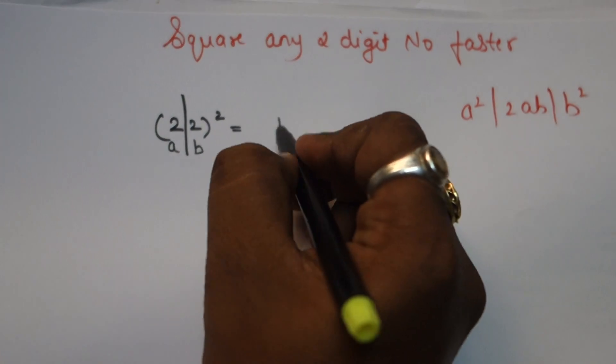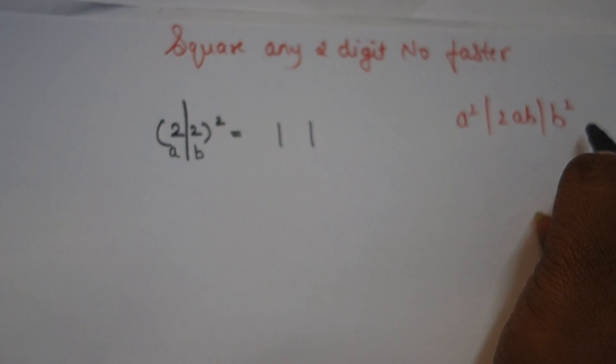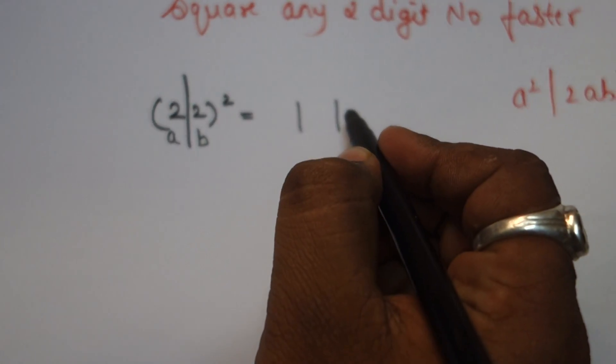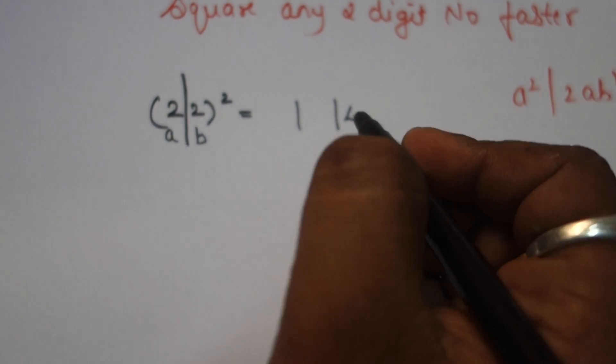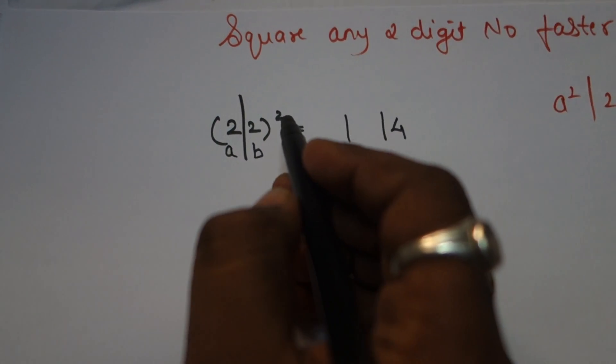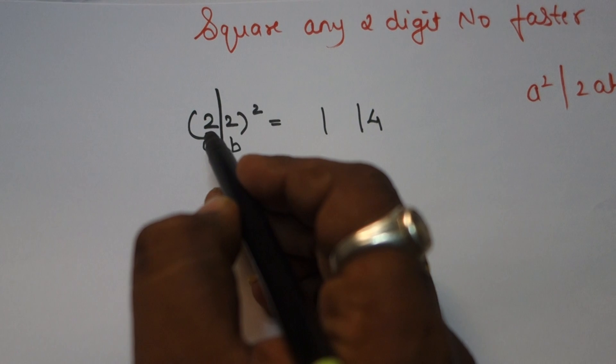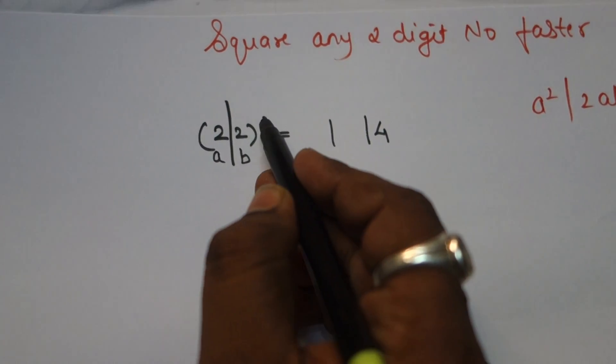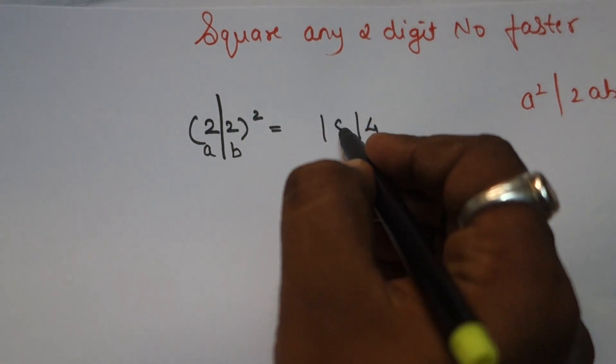Now apply the formula. B square: 2² = 4. Then 2ab. Consider this section as 2 times a times b, so 2×2×2 = 8.